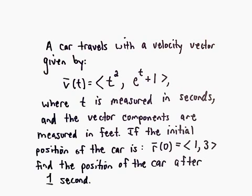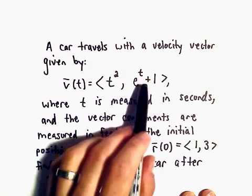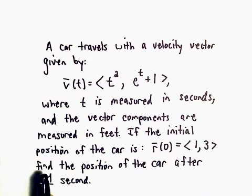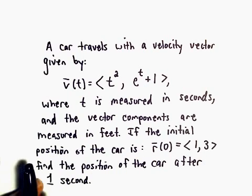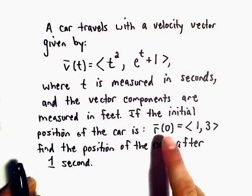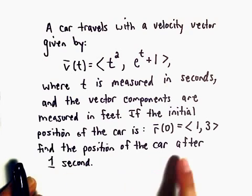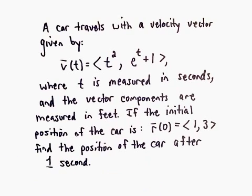So here we've got a car and it travels with a velocity vector given by v(t) equals <t², e^(t+1)>. t is measured in seconds and the vector components are measured in feet. If we know the initial position of the car is r(0) equals <1,3>, we want to find the position of the car one second later.